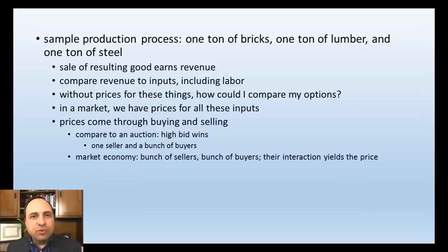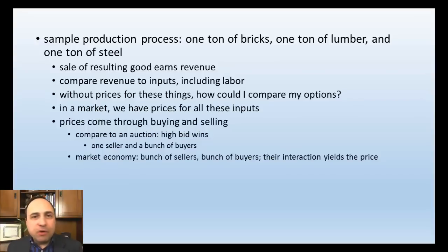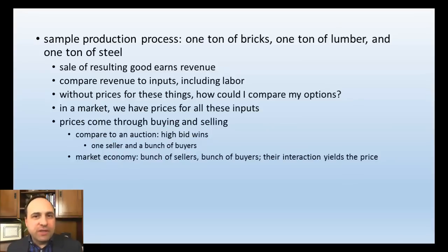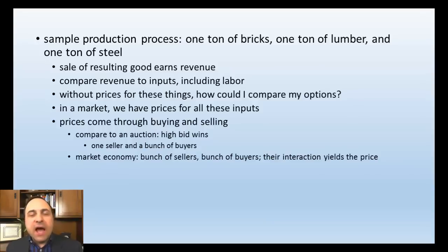Goods like bricks, lumber, and steel are capital goods — goods used to make consumer goods. Capital goods also include the physical plant and the trucks used to transport goods. These are all the means of production. Because there are prices for these capital goods, you can calculate profit and loss: you earned this much money, now subtract what you spent on capital goods, and you see how you're doing.